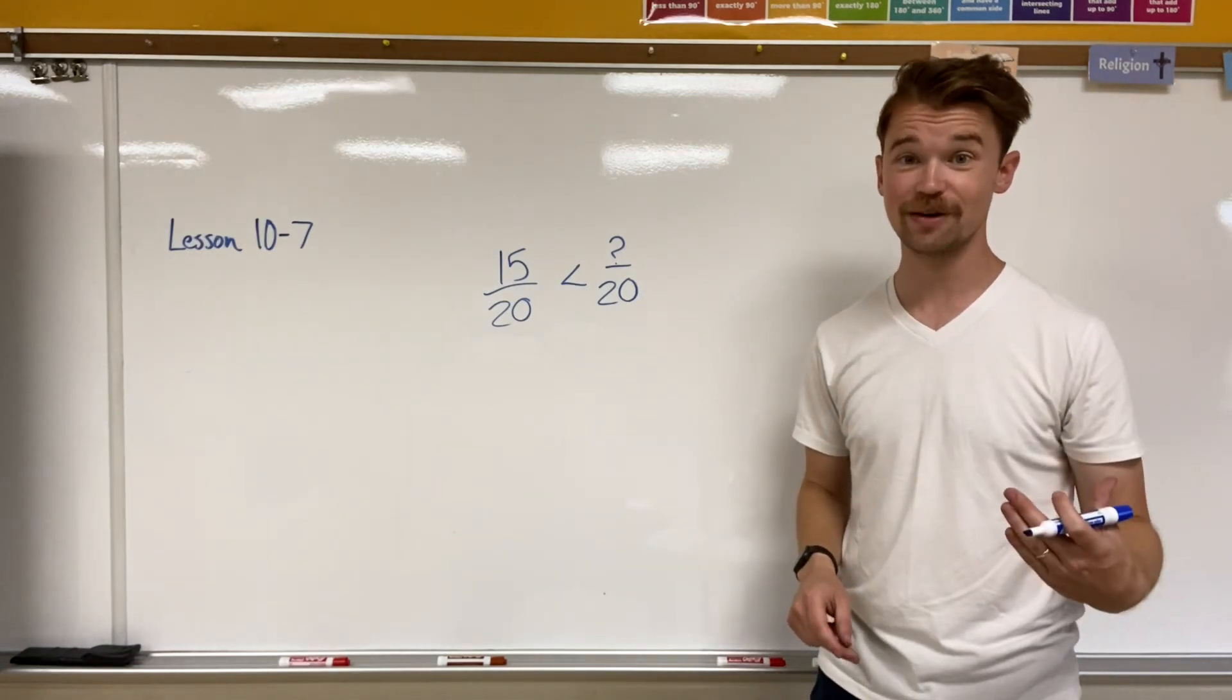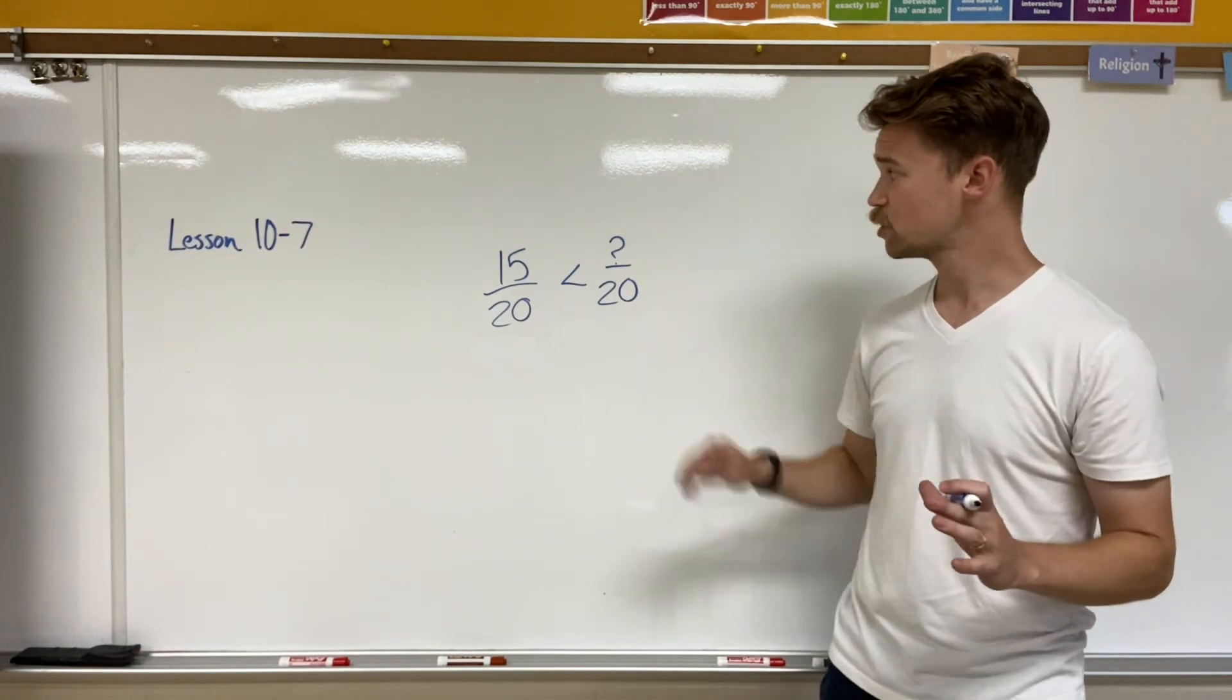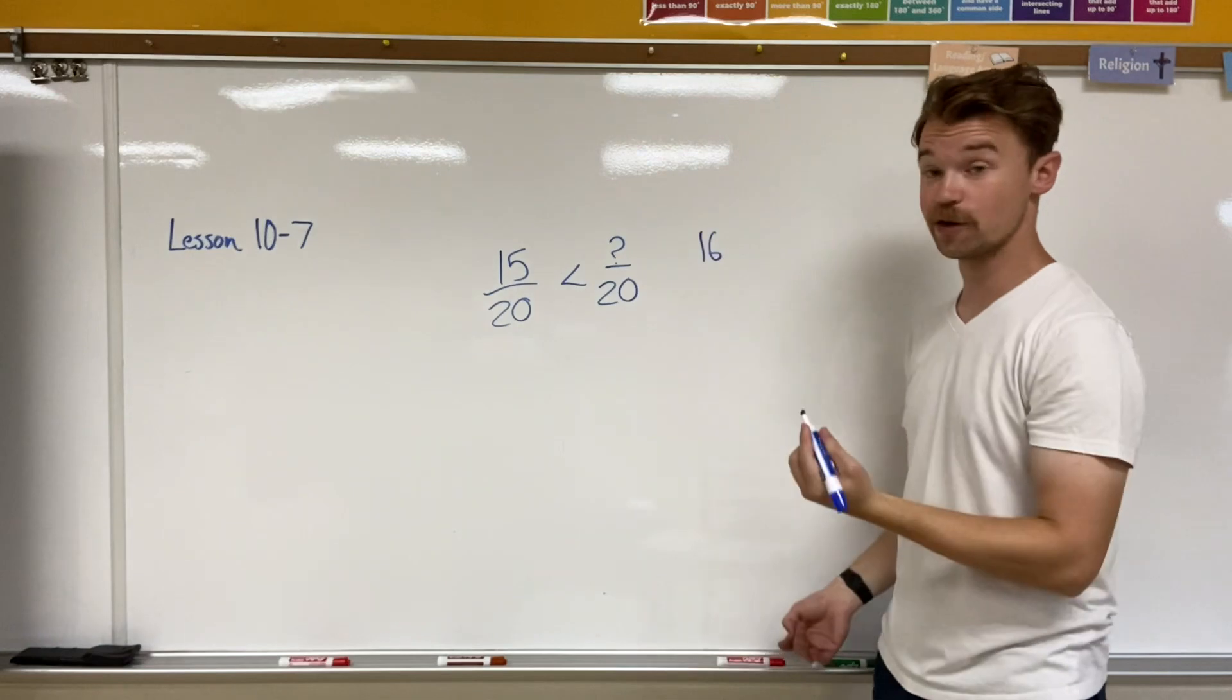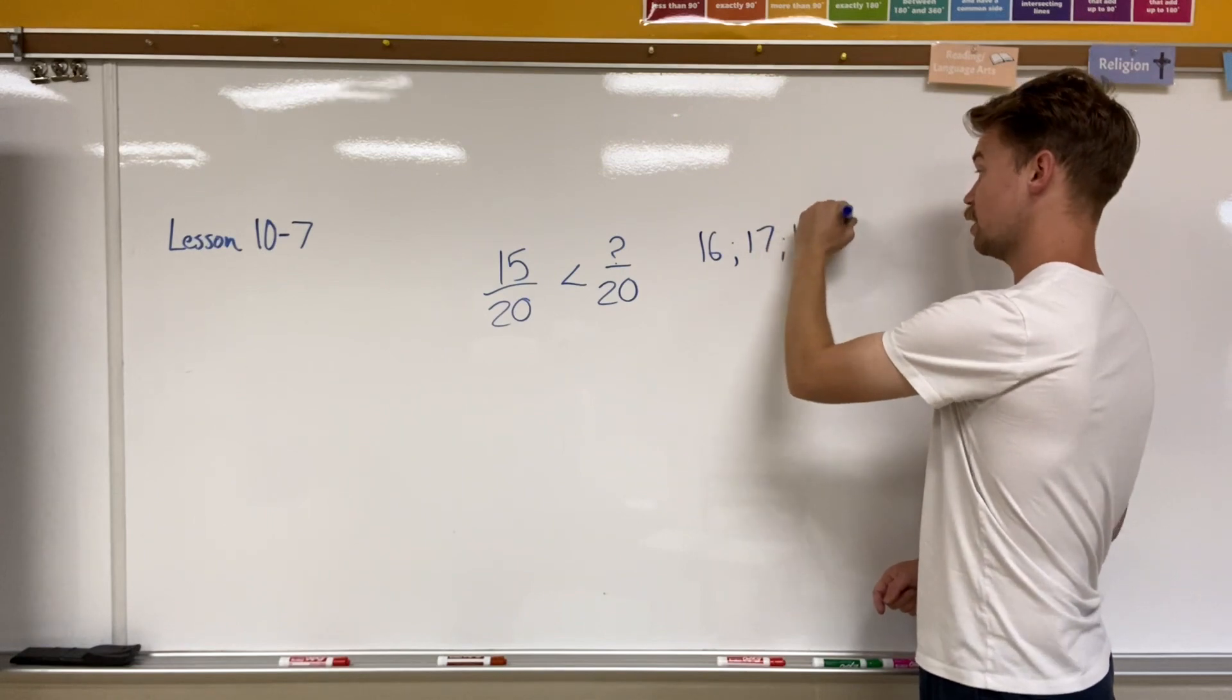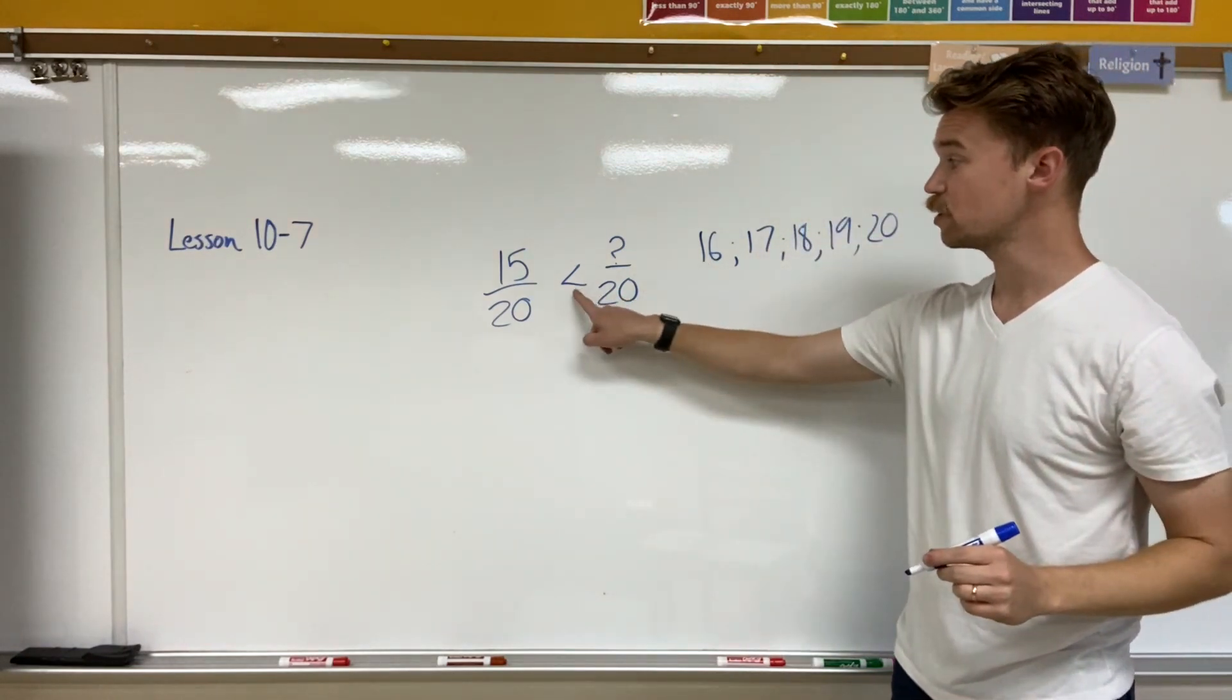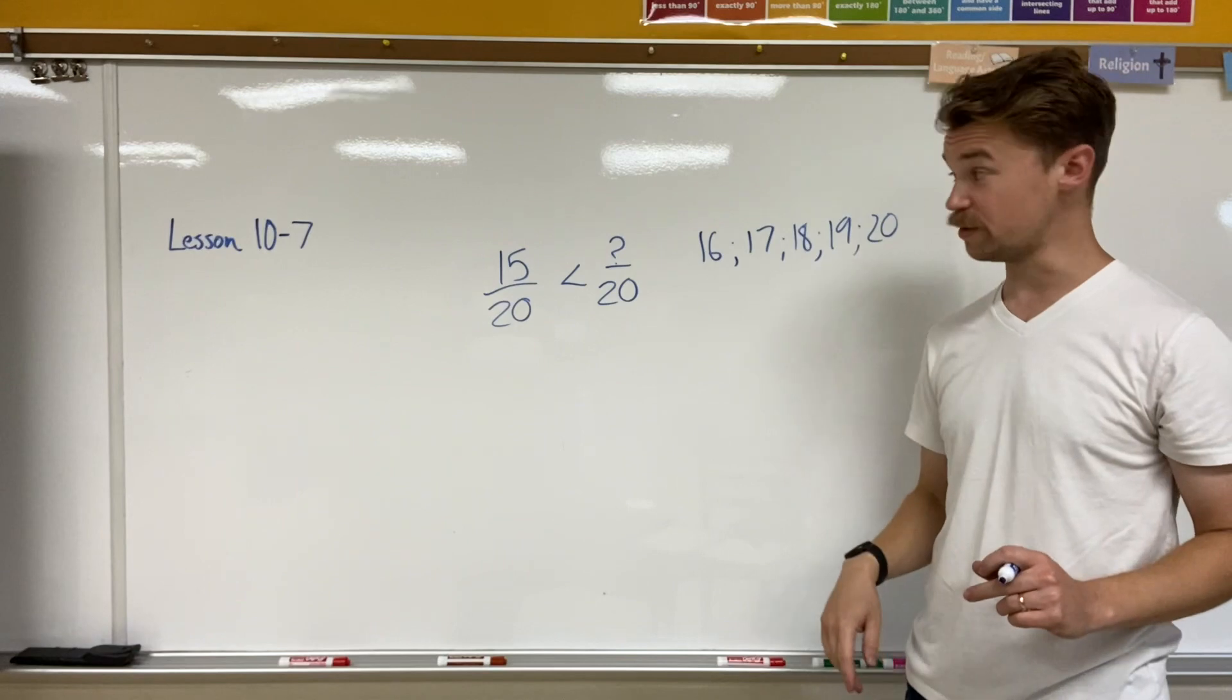We'll get to that later in the year or in fifth grade, but we're going to try to keep it less than or equal to 20. So the numerator could be 16. It could be 17. It could be 18, 19, or 20, because 16 is greater than 15. 17 is greater than, 18, 19, and 20 are all greater than 15.